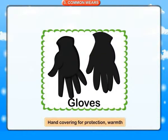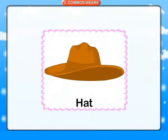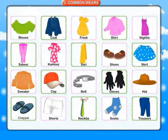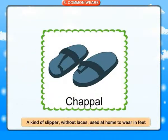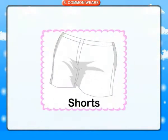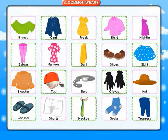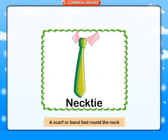Gloves: hand covering for protection and warmth. Hat: a covering for the head, made to fit the head, usually with a brim. Chappal: a kind of slipper without laces used at home. Shorts: trousers ending above the knee. Neck tie: a scarf or band tied round the neck.